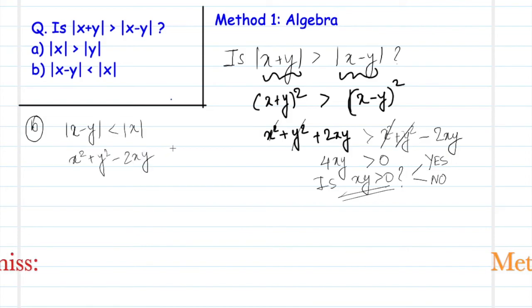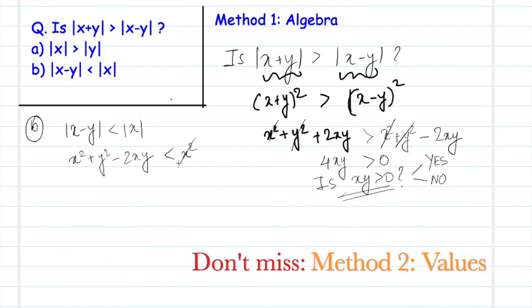So this becomes less than x square. X square cancels out and we get y square is less than 2xy or in other words 2xy is greater than y square which means that xy is greater than 0 because y square is positive. We get a distinct yes to the asked question is xy greater than 0 and hence this is sufficient.